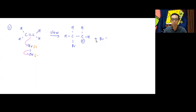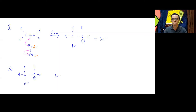The first step is the slow step. The second step is easy: the carbocation is positive, Br⁻ is negative — the minus attacks the plus. Draw the lone pair on bromine pointing to the carbocation carbon. This is the fast step. The product formed is CH₂Br−CH₂Br. Electrophilic addition is actually very simple.